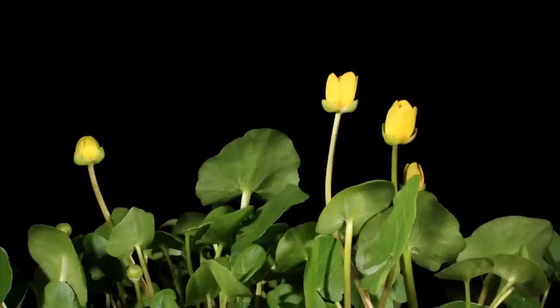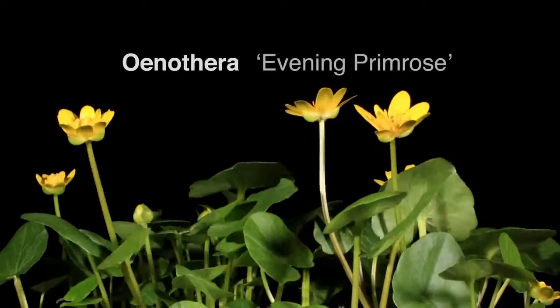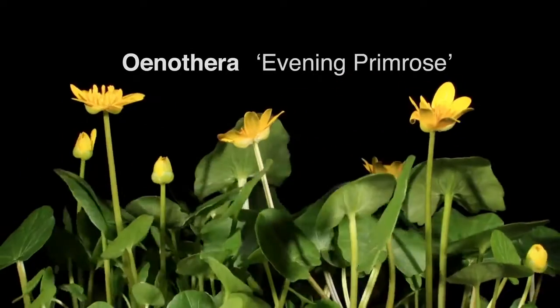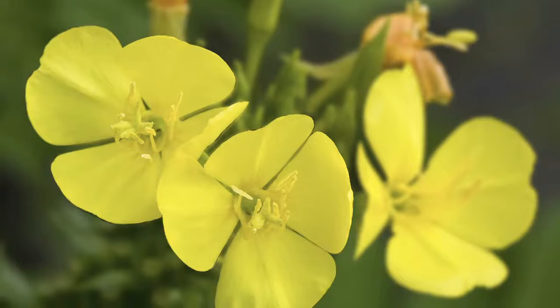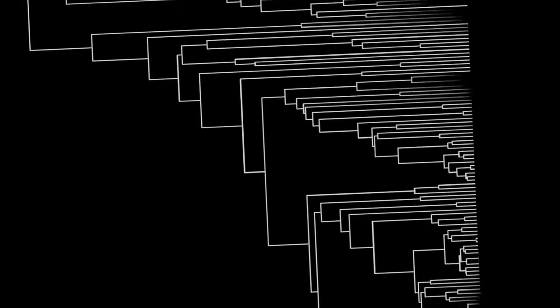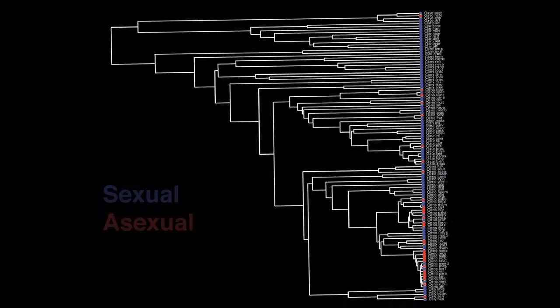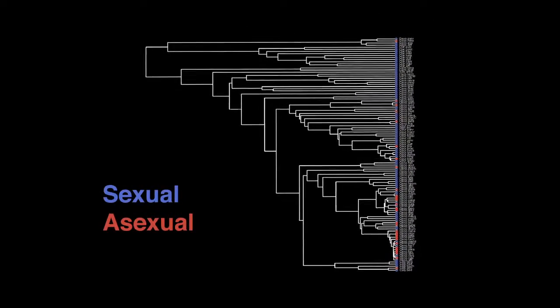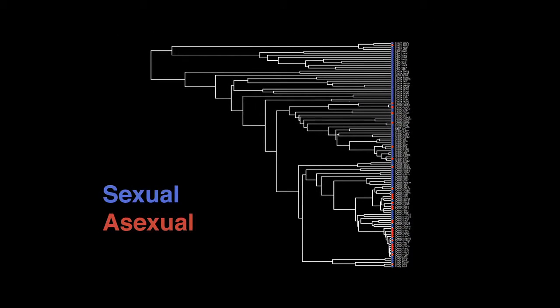One of the recent studies that we've done took a look at a family called the evening primroses. It turns out that a lot of the evening primroses are asexual, whereas others are sexual. We constructed the evolutionary tree among all of these species of primroses to find out what happens in the long term. We found that the asexuals were just fine at evolving new species — that wasn't the problem. But they didn't persist: either they went extinct, or even more commonly, after a while they went back to sex.